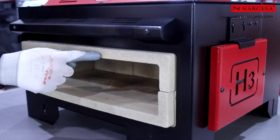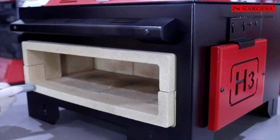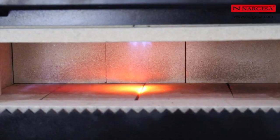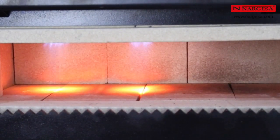Un rebord isolant, là où on enfourne le matériel, permet de maintenir la chaleur à l'intérieur de la chambre de combustion. Tous les brûleurs peuvent fonctionner indépendamment.